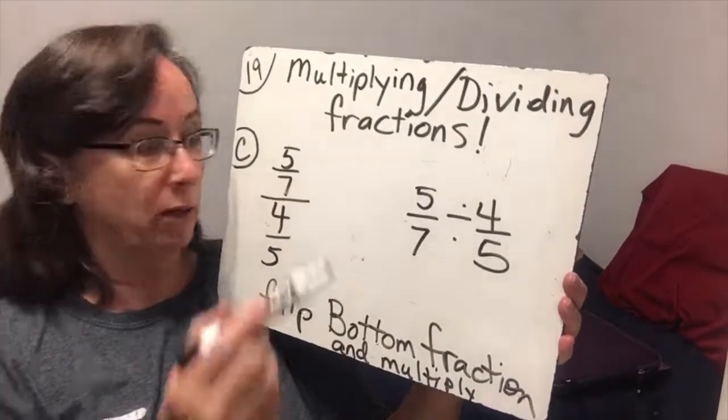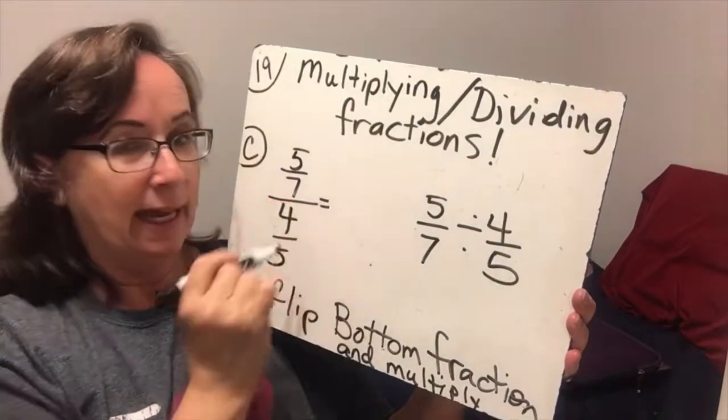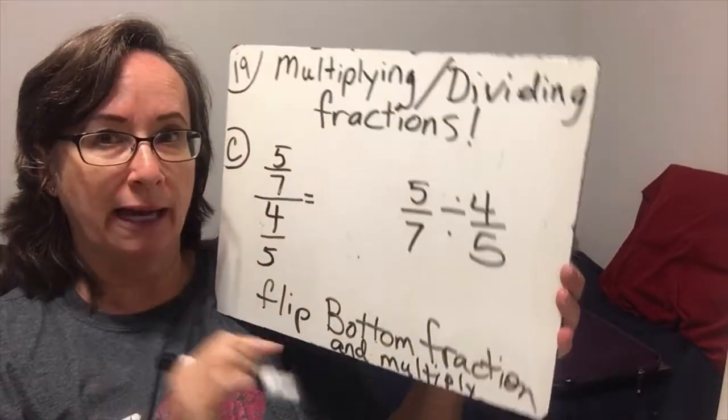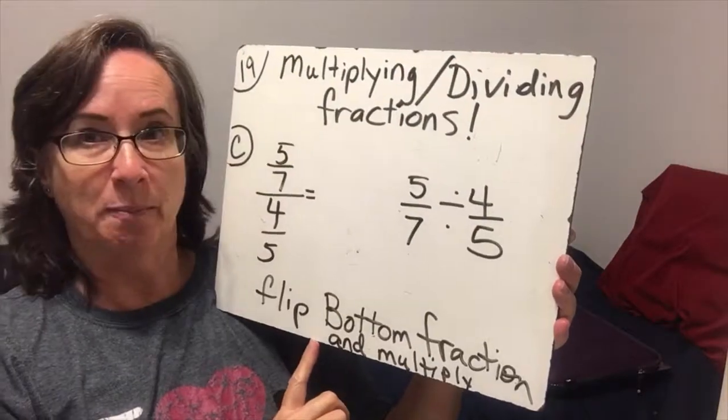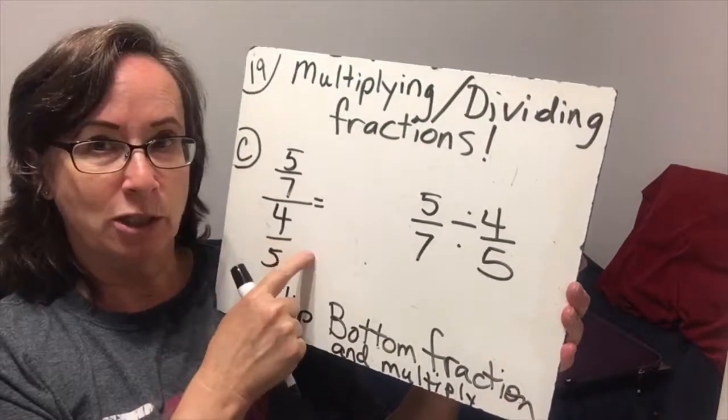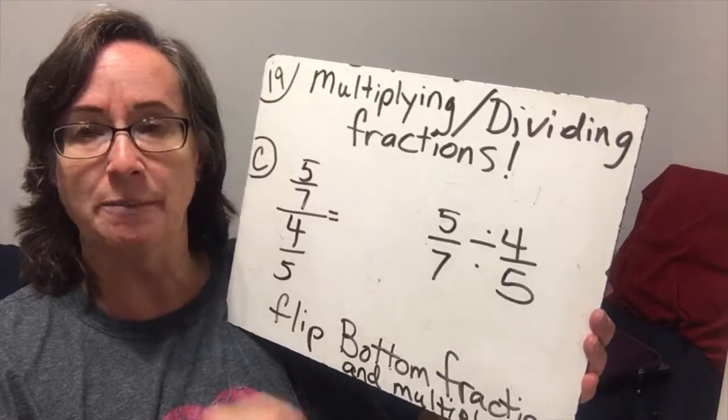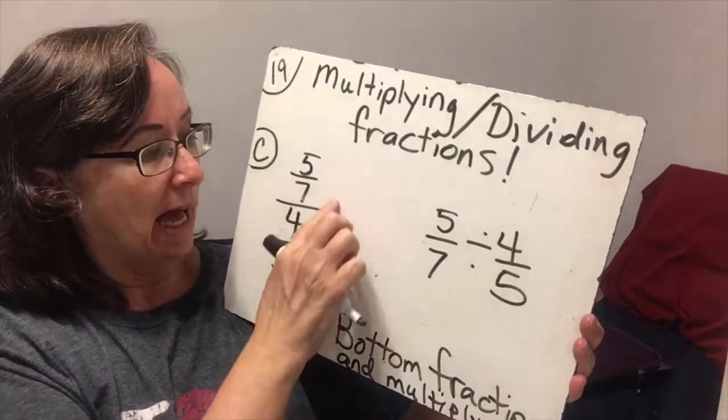So now we're going to take this one, and I'm going to show you why we flip the bottom fraction over and multiply. If I were to take this problem, and I said, I just want to get rid of that denominator, then I would say, if I multiply 4 fifths by its reciprocal,